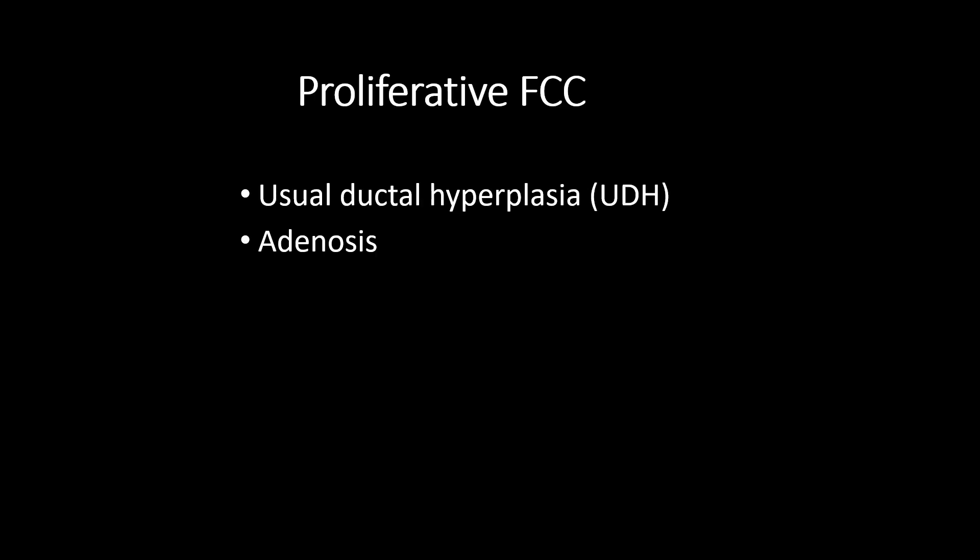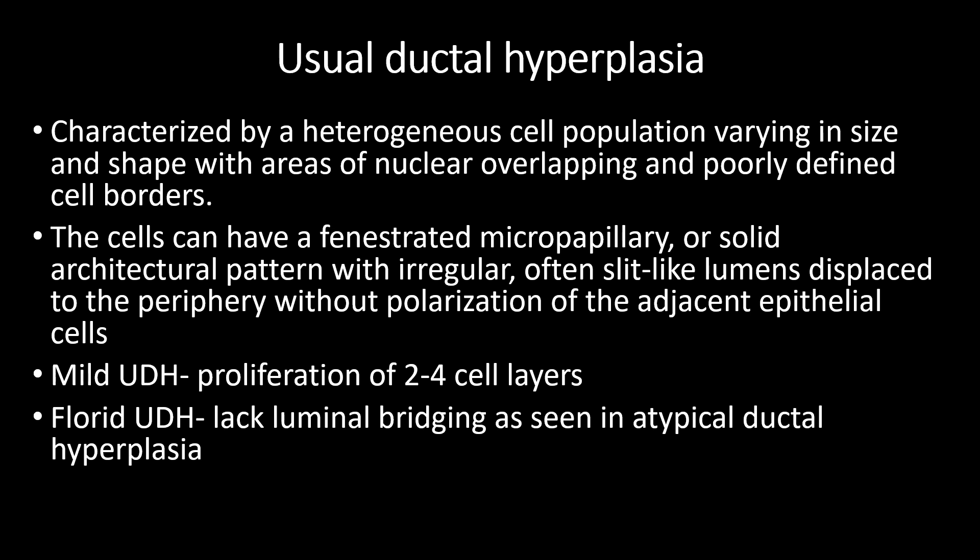In the category of proliferative FCC, usual ductal hyperplasia (UDH) and adenosis are seen. UDH is characterized by a heterogeneous cell population, varying in size and shape with areas of nuclear overlapping and poorly defined cell borders. The cells can have a fenestrated, micropapillary, or solid architectural pattern with irregular, often slit-like lumens displaced to the periphery without polarization of the adjacent epithelial cells. In mild UDH, there is proliferation of 2-4 cell layers. In florid UDH, there is lack of luminal bridging, as seen in atypical ductal hyperplasia.